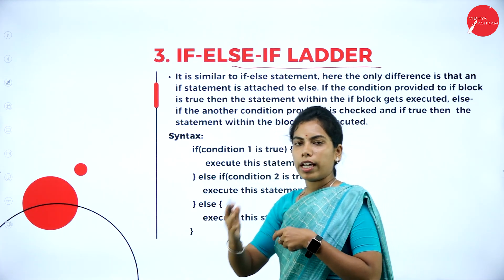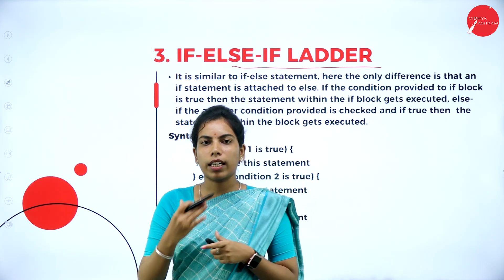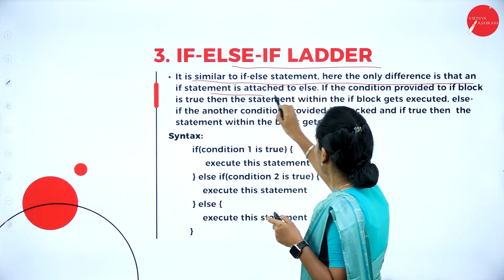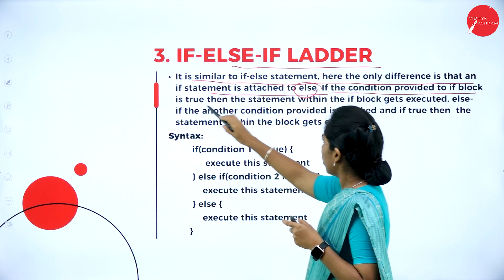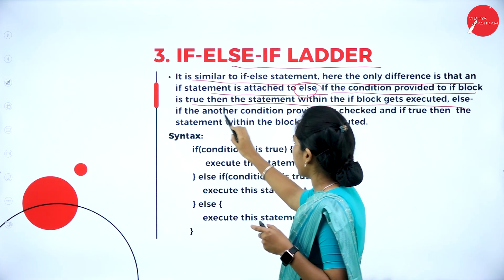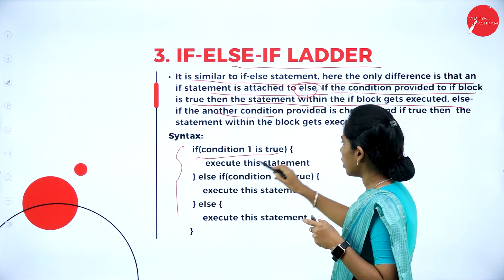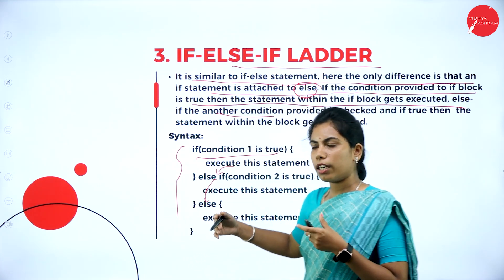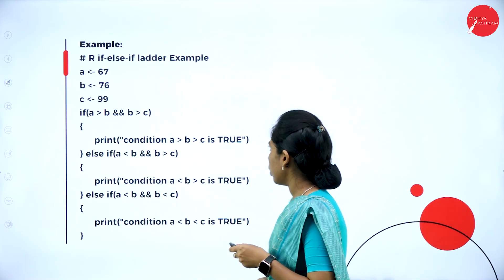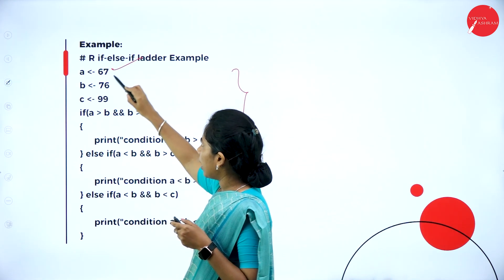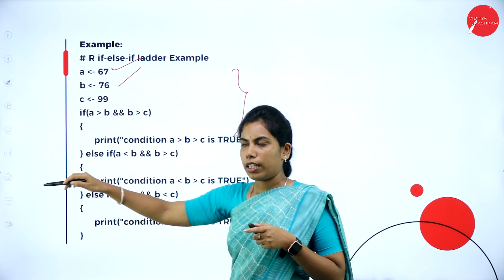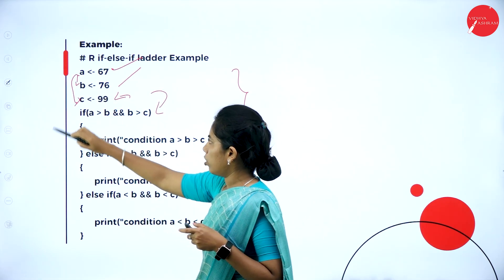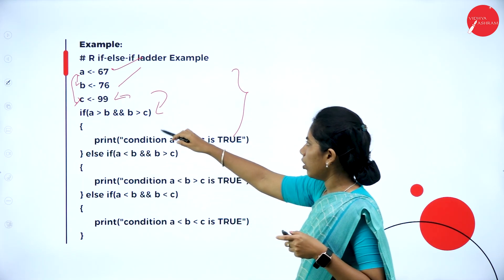The if-else ladder, or else-if ladder, allows placing else-if statements inside the if block. The basic syntax has an if condition, followed by else-if conditions, and a final else. For example, assigning 67 to a, 76 to b, and 99 to c: when comparing these values using the AND operation — if a > b AND b > c, that condition prints.